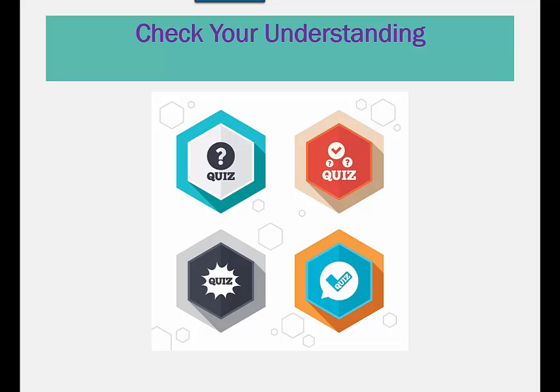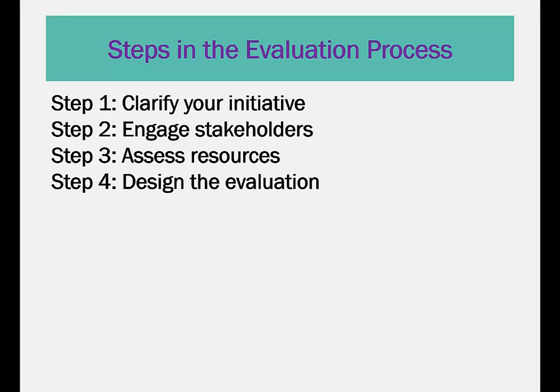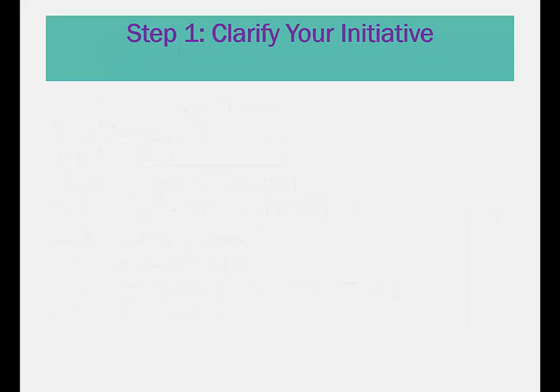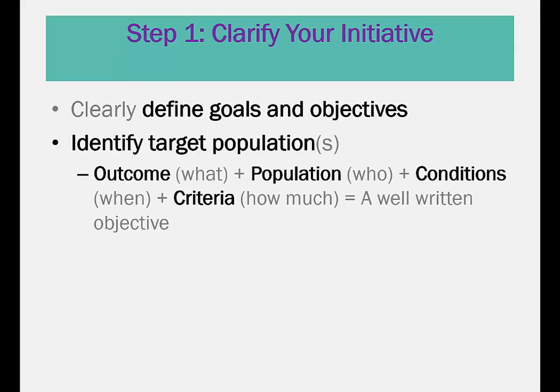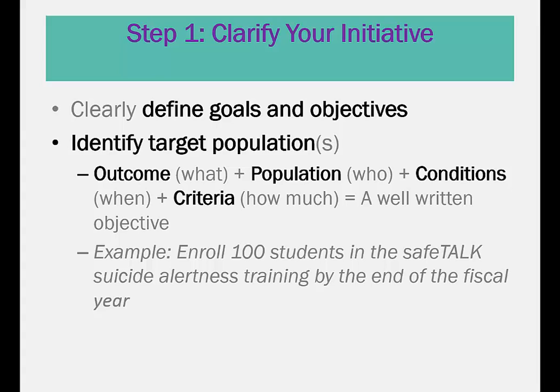Now that we have gone through the different types of evaluation, it is time to check your understanding. There are nine steps involved when thinking about evaluation. Step 1: Clarify your initiative. At the onset, it is very important to clearly define your goals and objectives by considering the outcome you are wishing to achieve, the population you are wishing to target, when you are wishing to achieve the outcome, and the criteria that needs to be met for you to know the initiative has been successful.